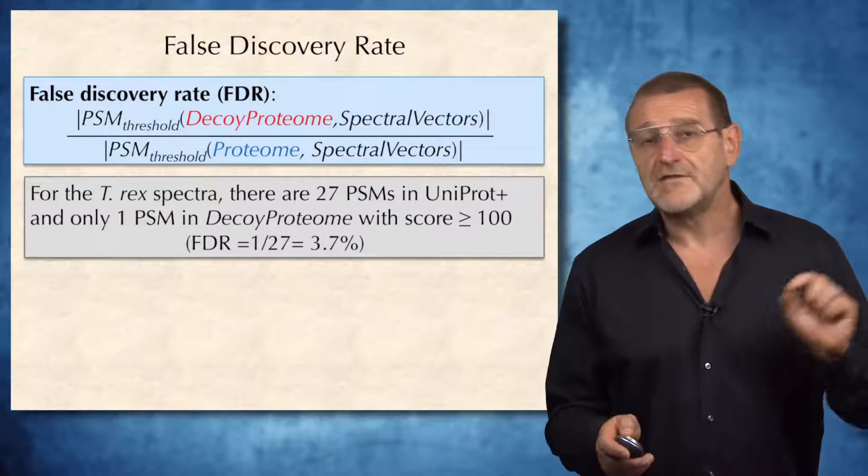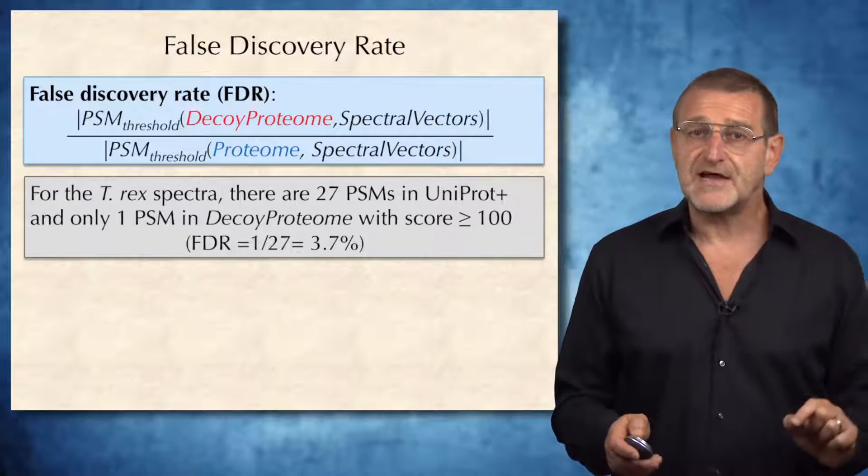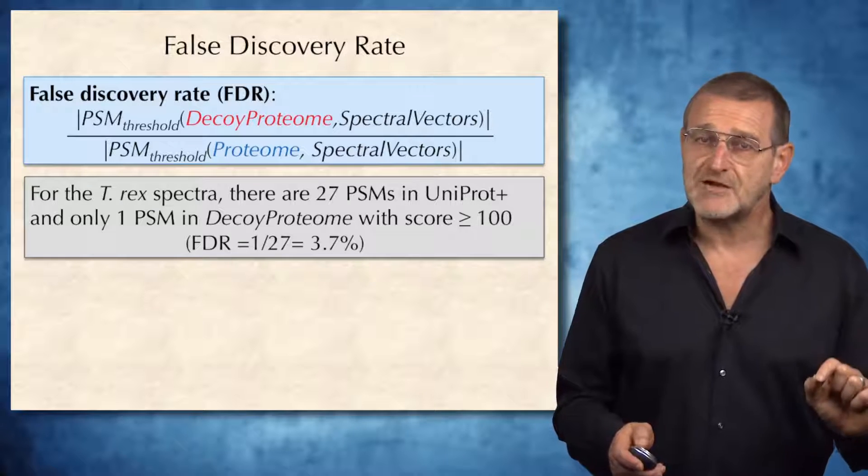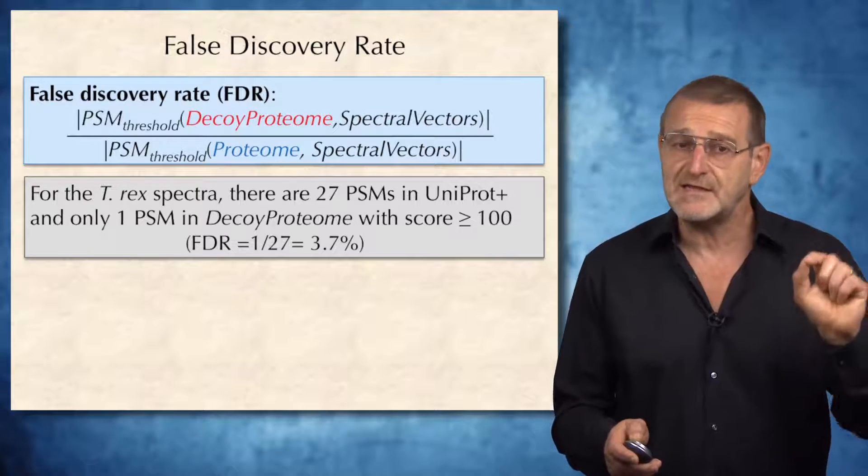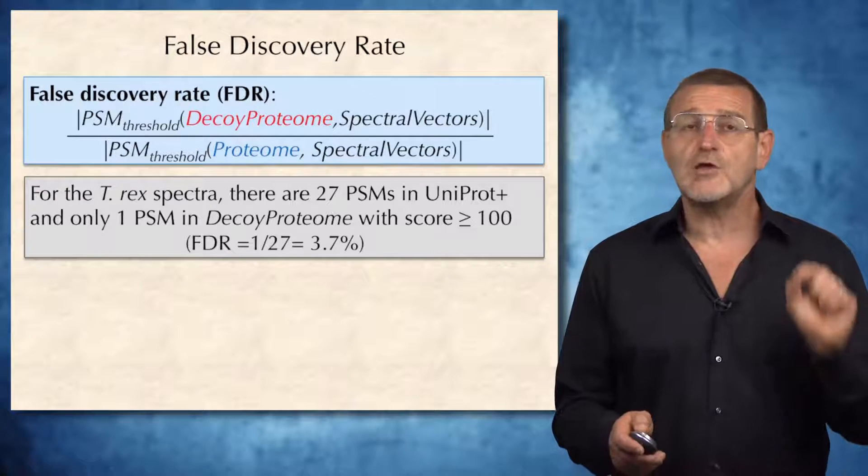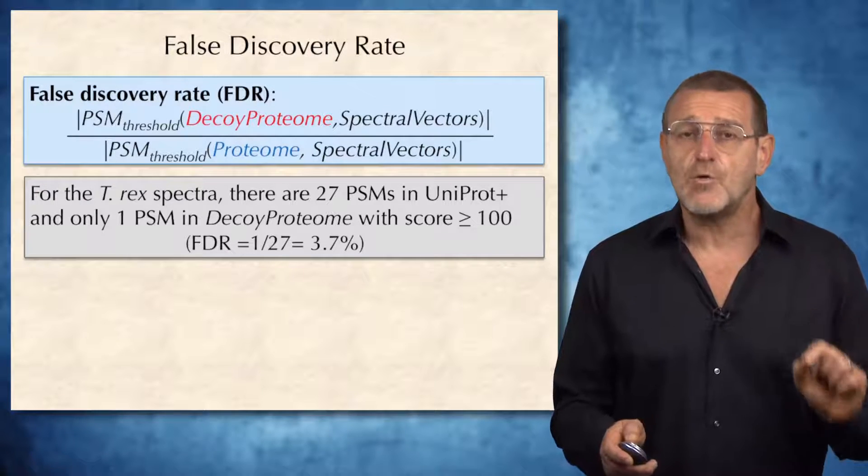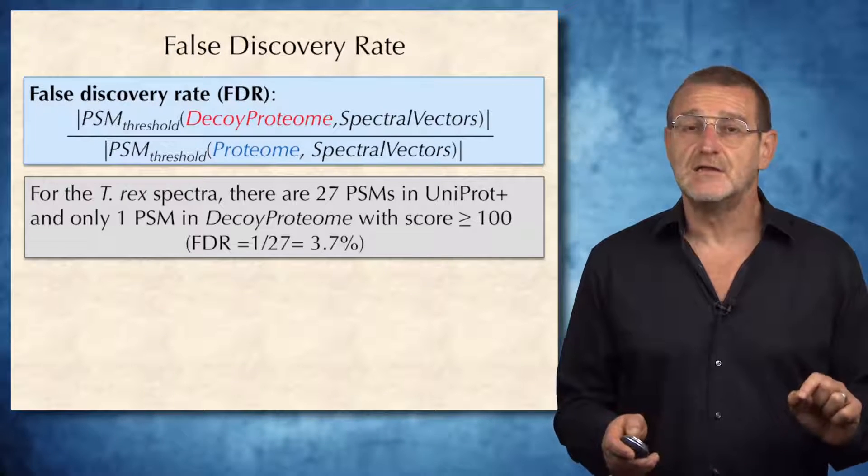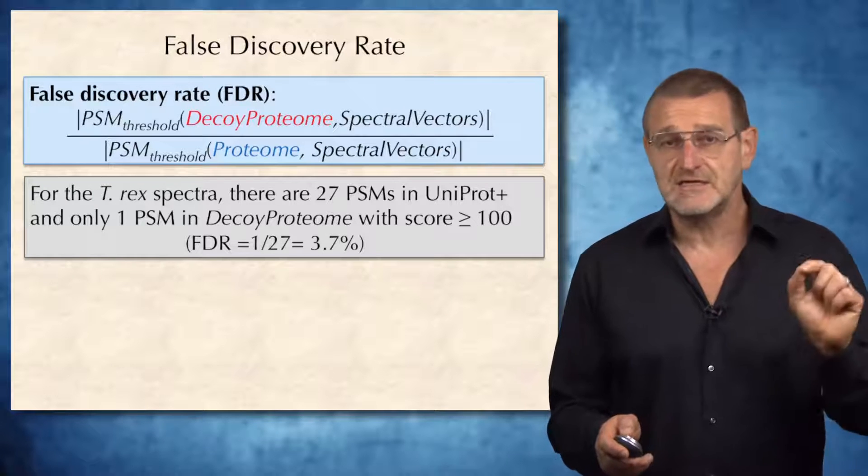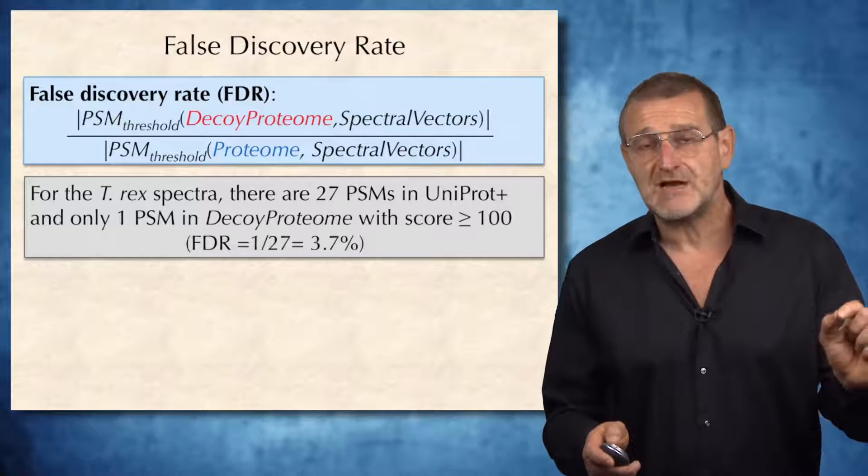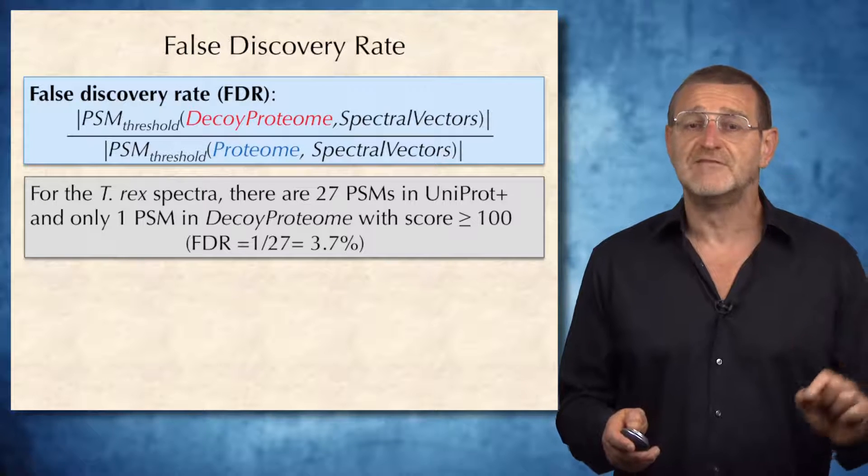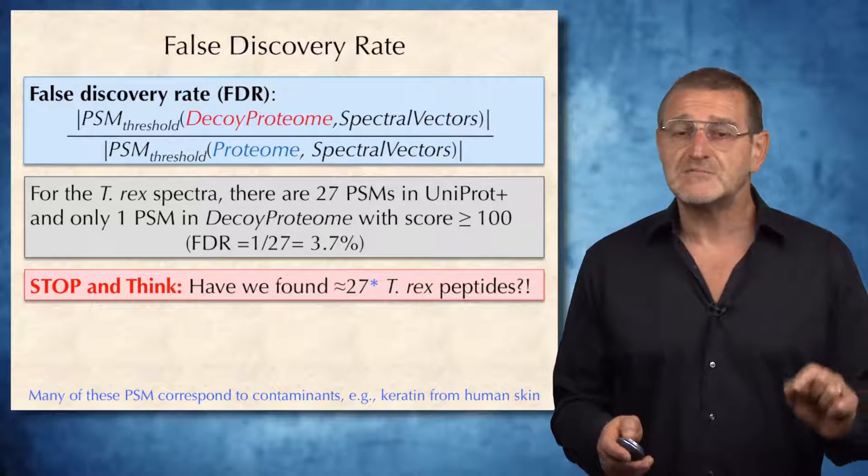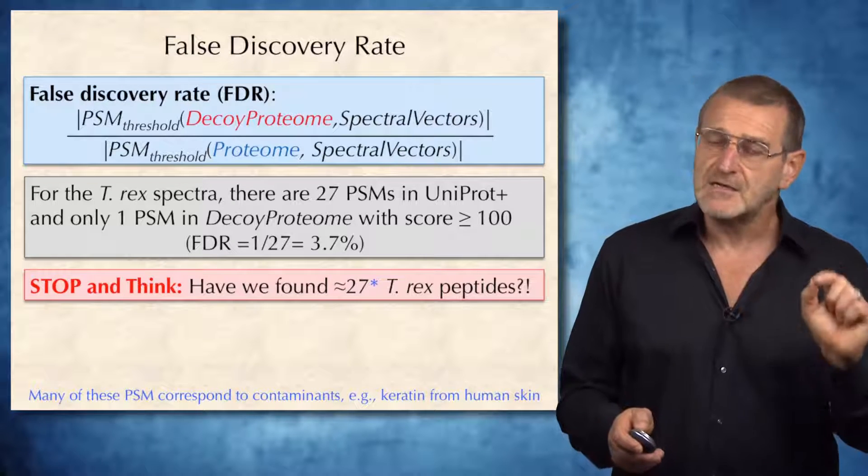And when we run this experiment on T-Rex spectra, then we will identify 27 peptide spectrum matches in UniProt plus real database, and only one peptide spectrum match in decoy proteome of the same size for a threshold equal 100. Which means that in this experiment, FDR will be a respectable 3.7%. But does it mean that we just found approximately 27 T-Rex peptides? Not quite,